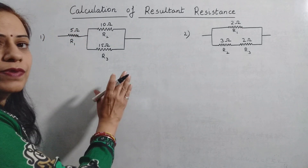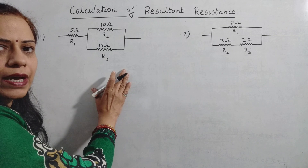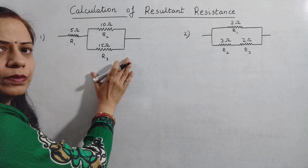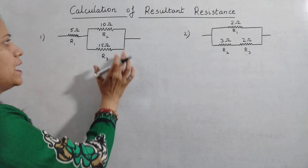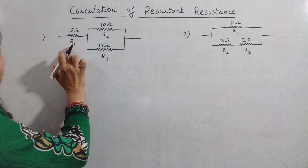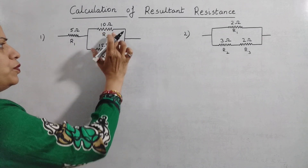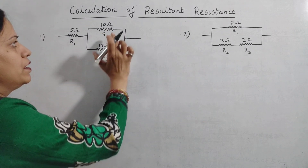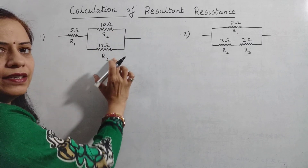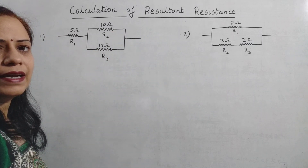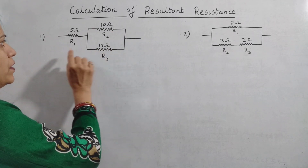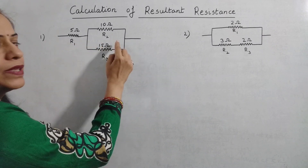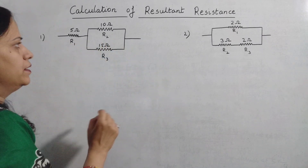This is the first question I am going to take up. The circuit I have already drawn on the board. You can see that there are three resistors R1, R2, and R3. R2 and R3 are connected in parallel with each other, whereas R1 is in series with this arrangement.